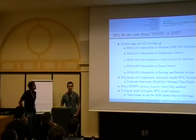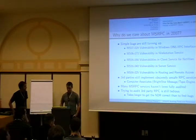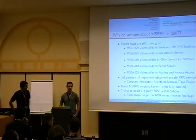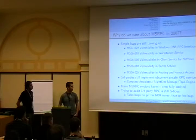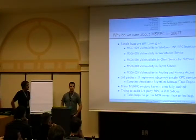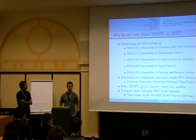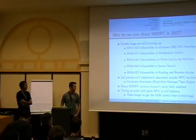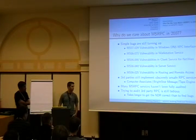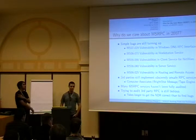We care about MSRPC because there are still bugs being released in 2006 and 2007. Rasmans, DNS, Workstation, Distributed File System — all high-impact bugs, and a lot of them are still fairly simple stack smashers that aren't very hard to find. A big point here is third parties that implement RPC: Samba re-implements all the Microsoft RPC services, Computer Associates implements a bunch of custom things, and Trend Micro has had several vulnerabilities in their RPC services in the last couple of months. We've also discovered that many Microsoft RPC services haven't been fully audited — we found two bugs with our framework reported to Microsoft a couple weeks ago.